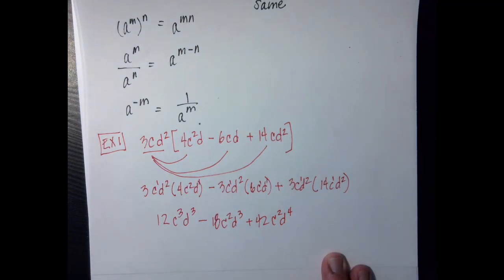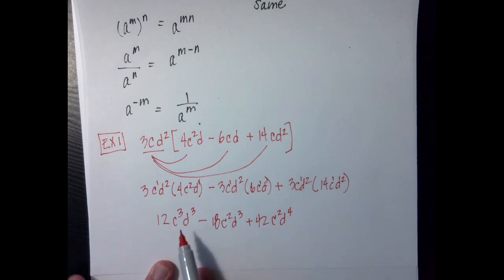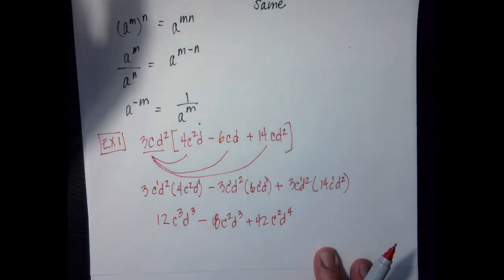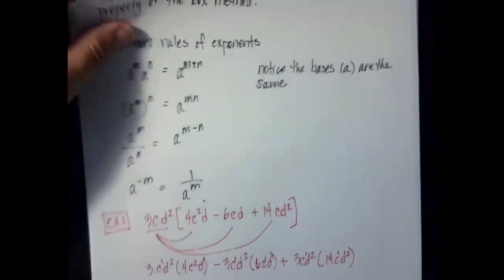This would be my simplified product. Remember that if any of these terms have the same bases and the same exponents, we want to combine like terms when we're done. Let's move on to our second example. I'm going to show you a different method — you've probably seen it in the past, but I think it's a handy way to do the distributive property.